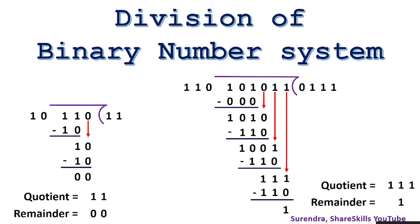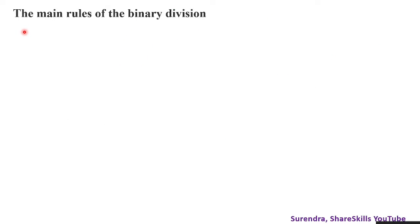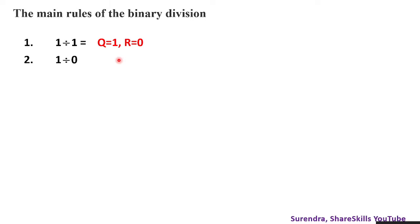It's very simple — we can only divide using either 0 or 1, we cannot use any other number beyond that. Let's go through some basic rules for binary division. First, 1 divided by 1: the quotient is 1 and the remainder is 0. Next, 1 divided by 0: we cannot divide any number by 0, so that is meaningless.